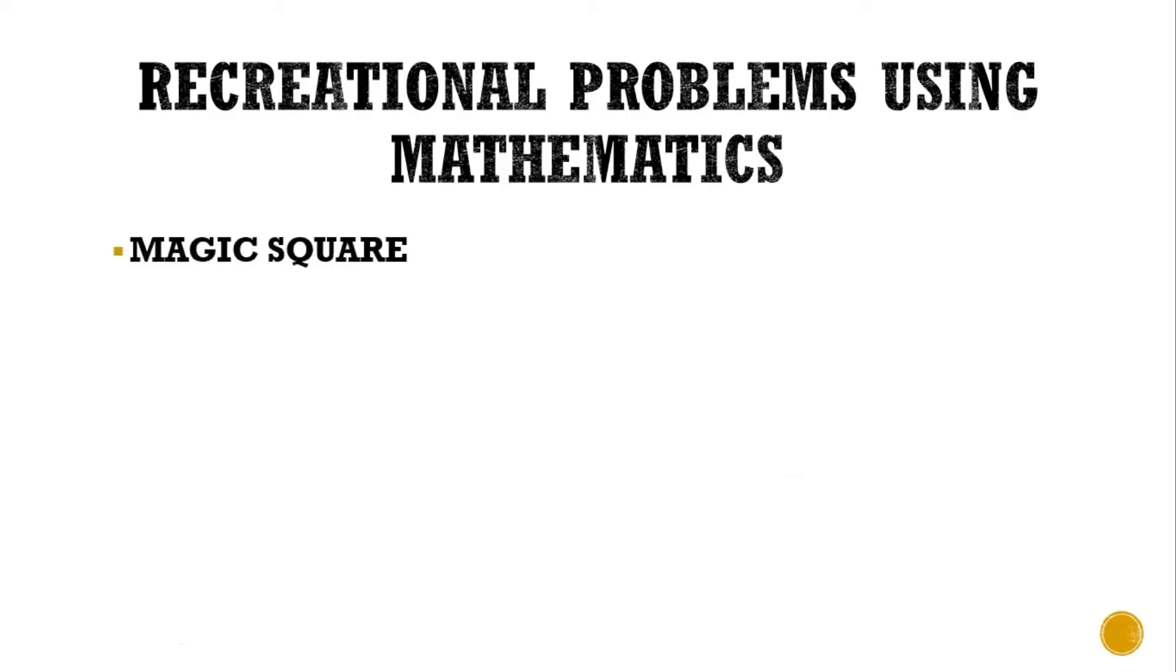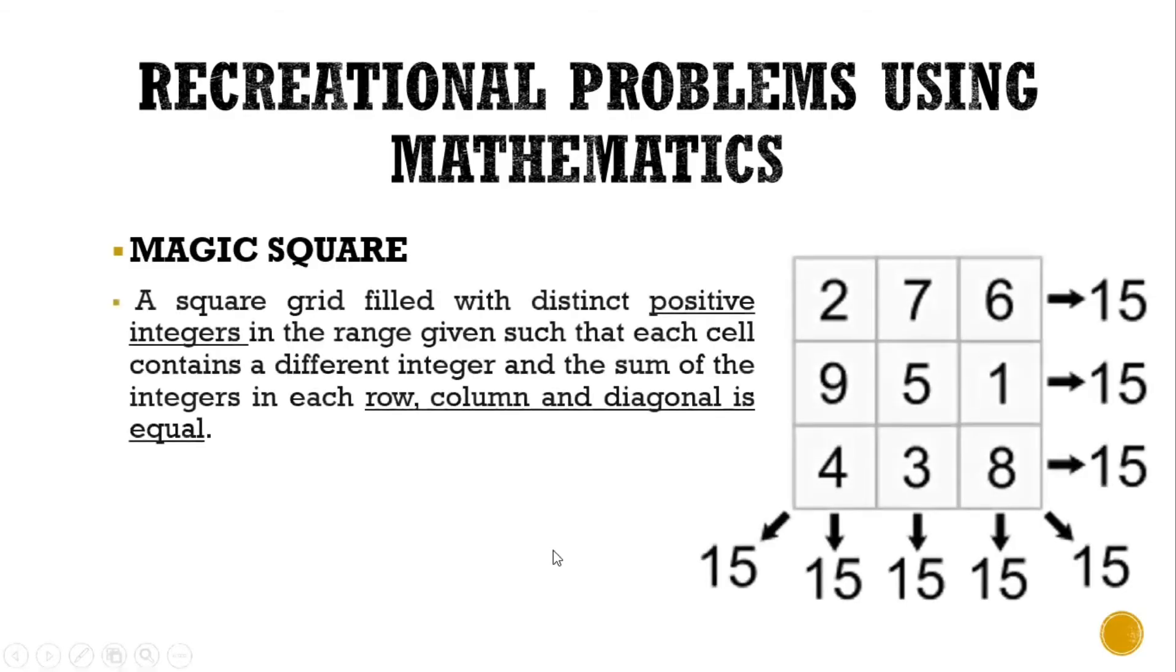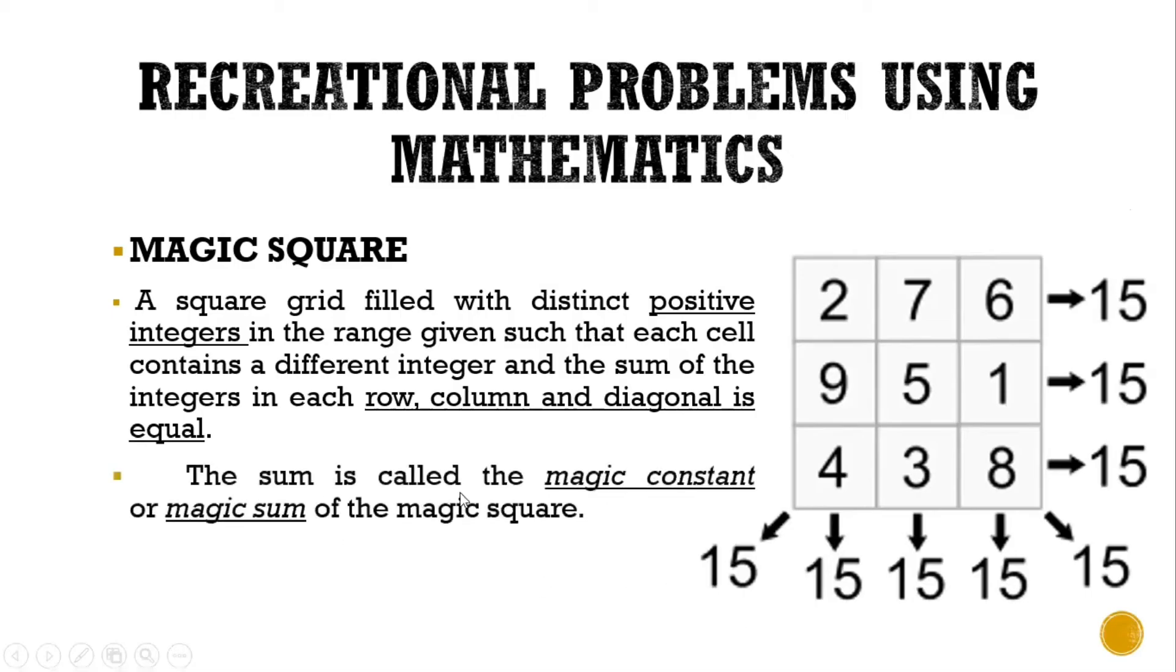We have here magic square. A magic square is a square grid filled with positive integers in the range given such that each cell contains a different integer and the sum of the integers in each row, column, and diagonal is equal. When you solve a magic square, you're given a certain range or interval of numbers to use to fill out the square. In here, we have the numbers from 1 to 9. In a magic square, when you add the numbers horizontally, vertically, and diagonally, they must come up to the same sum. In this case, we have 15. That's how magic square works. The sum is called the magic constant or magic sum of the magic square.